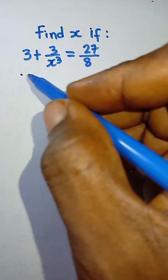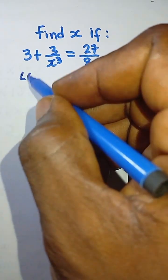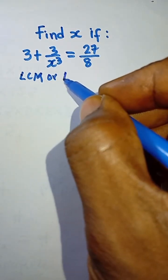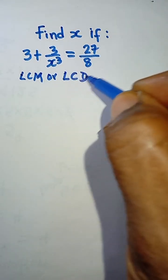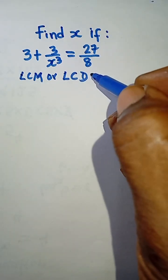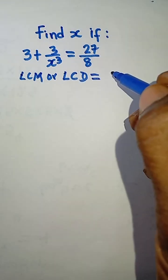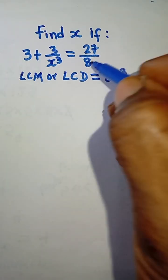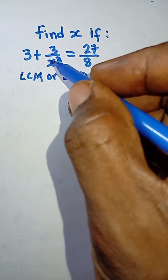In order to solve this, the lowest common multiple or the least common denominator of x cubed and 8 is equal to 8x cubed. That is simply multiply this and this.